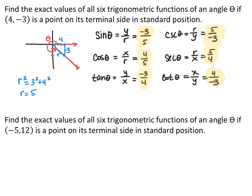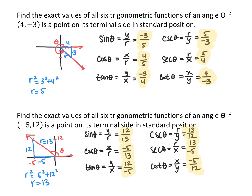For the point (negative 5, 12) in Q2, use the Pythagorean theorem to find r = 13, a 5-12-13 triangle. Then: sine = 12 over 13, cosine = negative 5 over 13, tangent = 12 over negative 5, cotangent = negative 5 over 12, secant = 13 over negative 5, cosecant = 13 over 12. Know your six trig function ratios and the unit circle to evaluate them both on and off the unit circle.